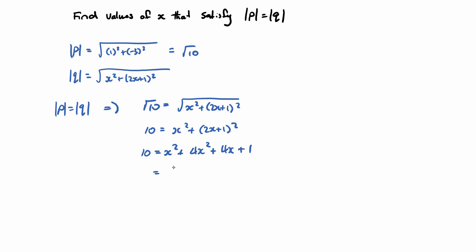So I'm left with now a quadratic. I have 5x squared plus 4x and this will be minus 9 equals 0.